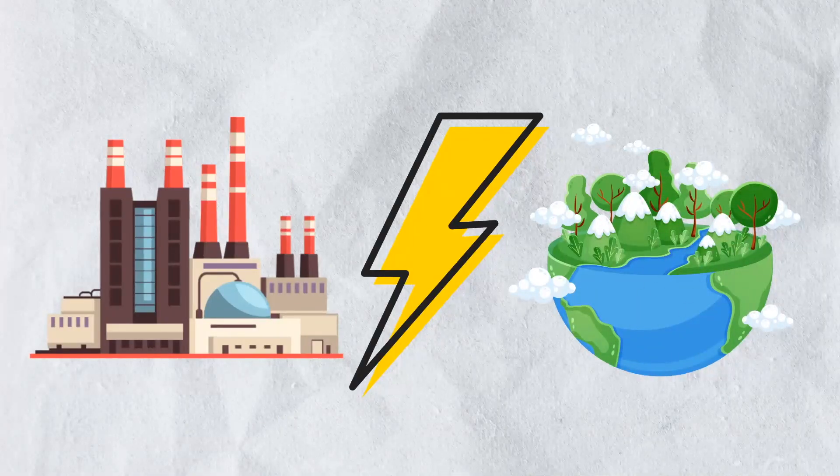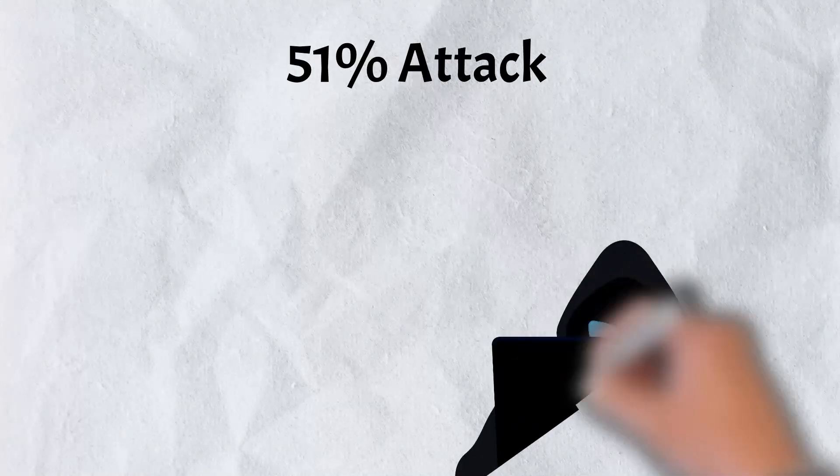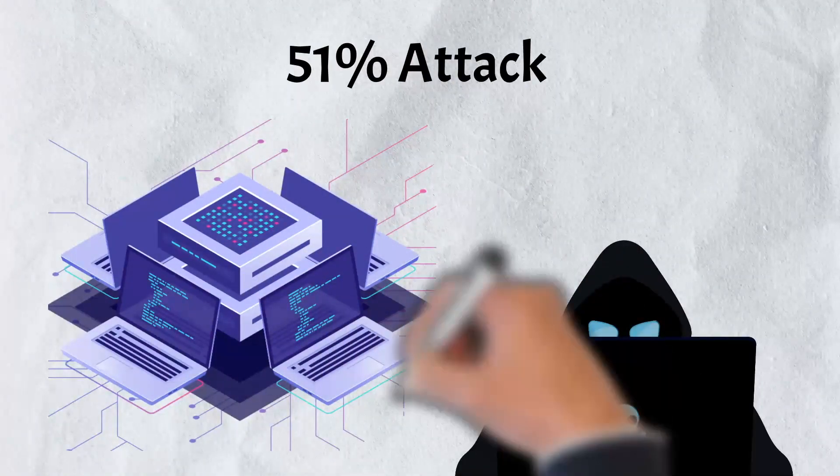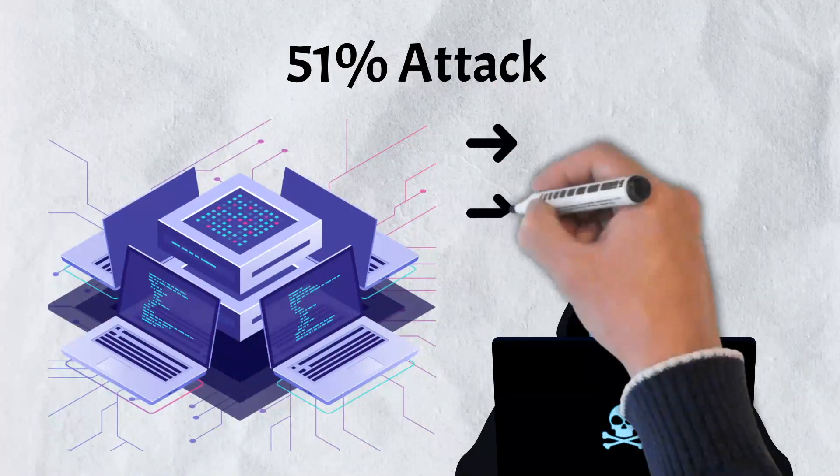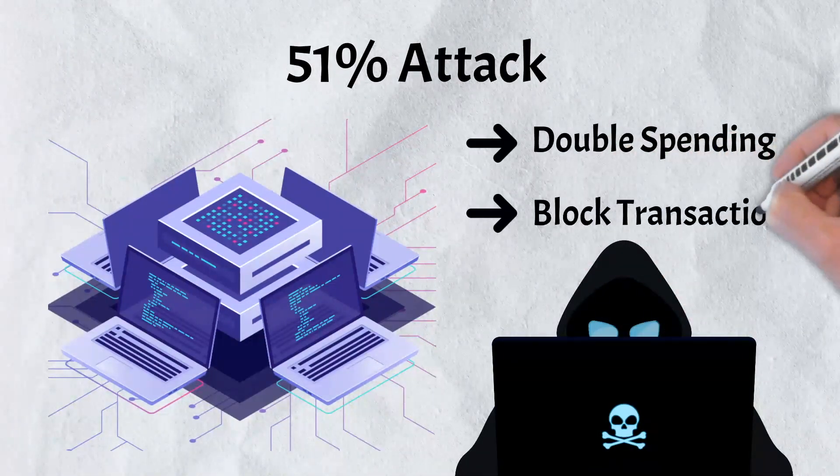Another problem, although unlikely, is known as a 51% attack. If a single mining entity obtains 51% of Bitcoin's hash rate, or the measure of computational power used to verify transactions, it can temporarily break the rules by double-spending money and blocking transactions.